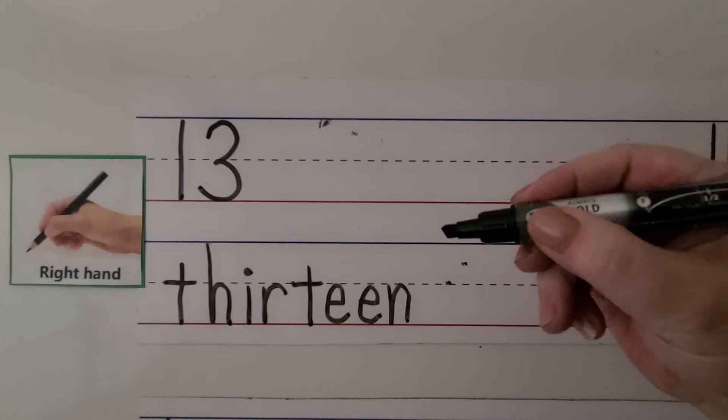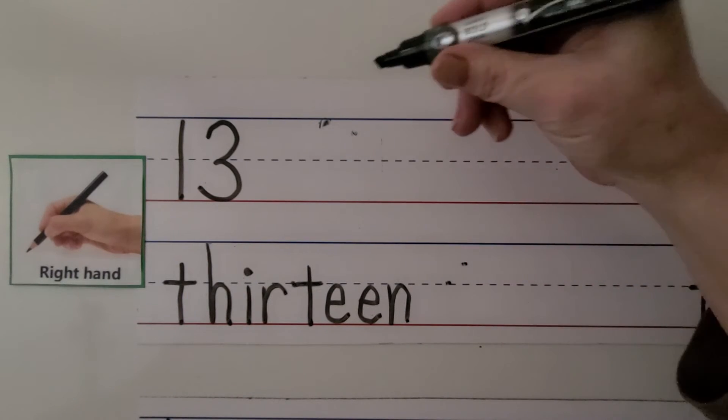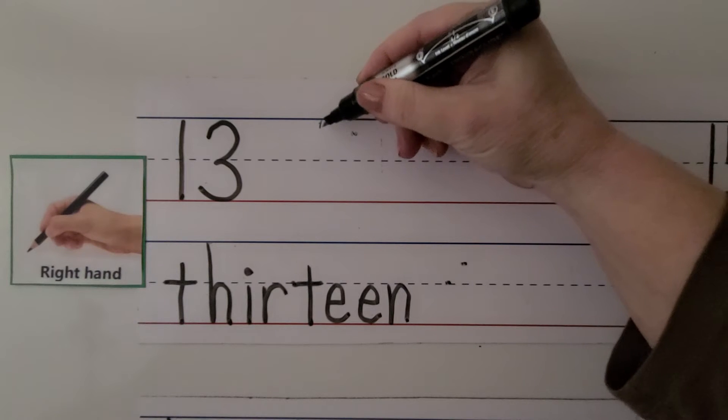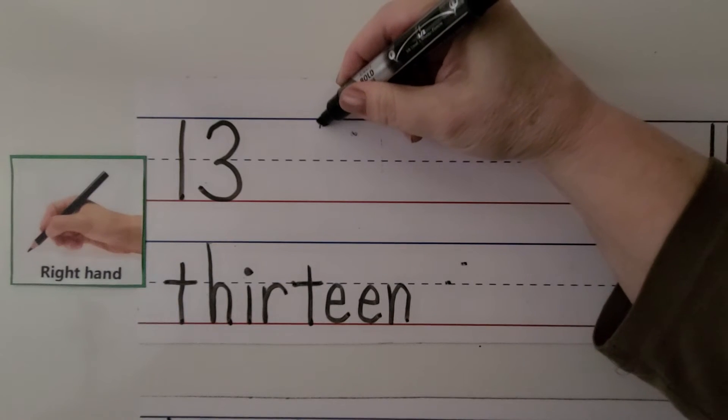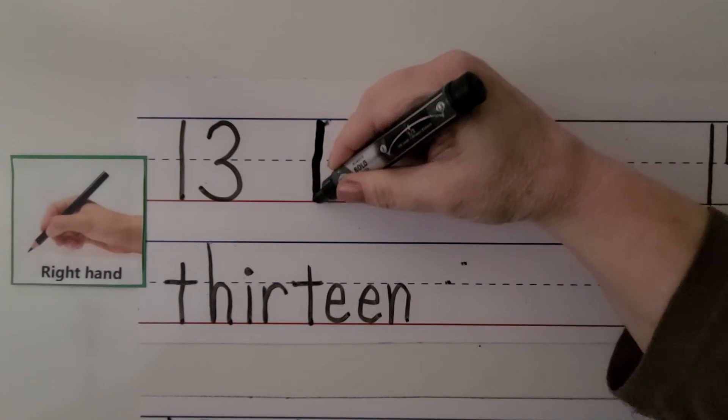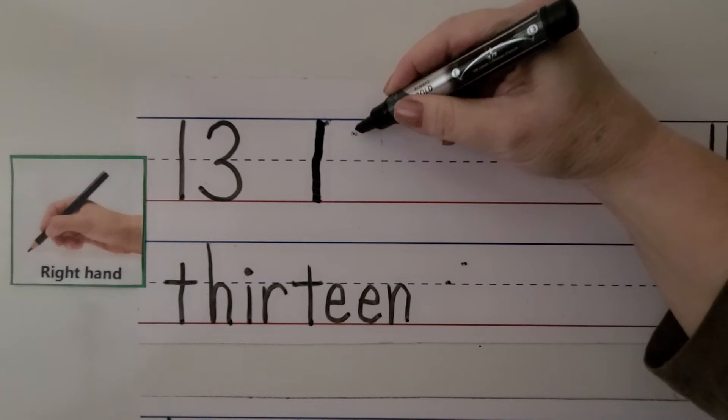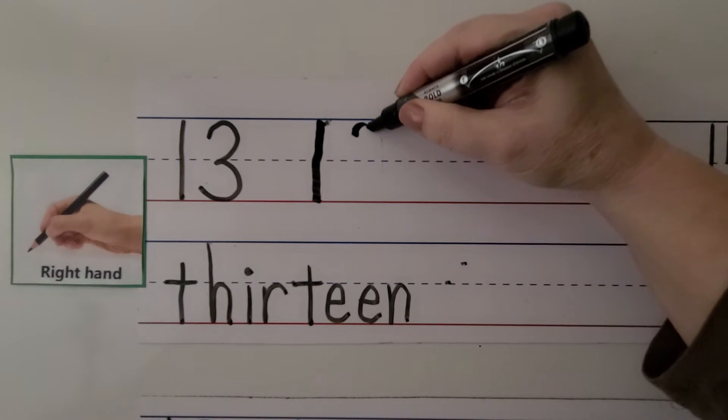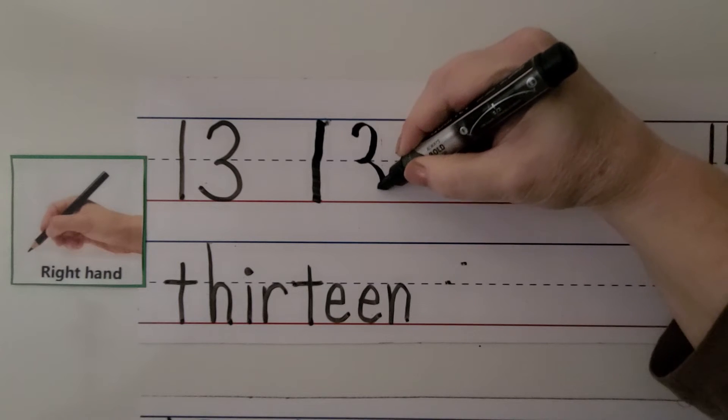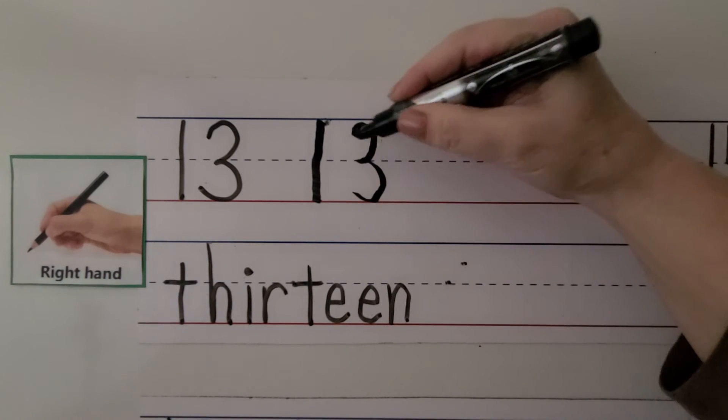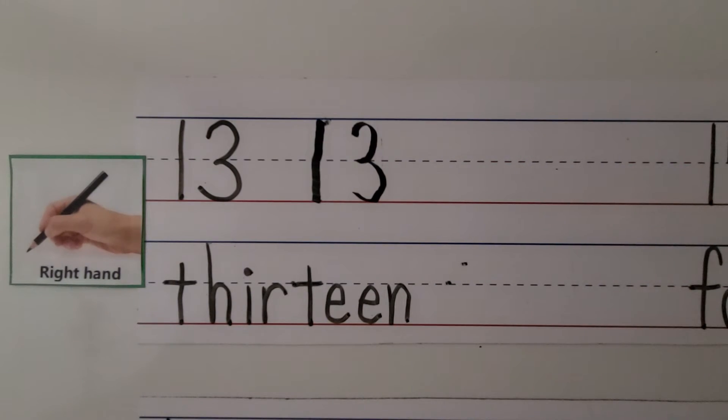We can use our right hand to write the number 13. We start here at the top line and we make a 1. Then, we start here a little bit below the top line and make our 3. The 1 and the 3 next to each other make the number 13.